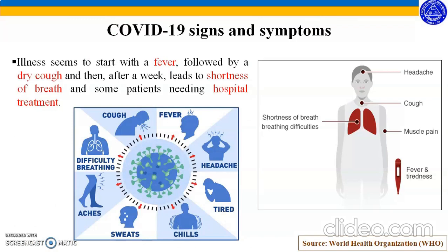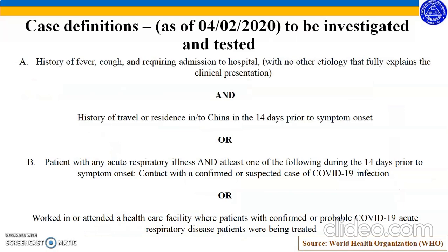What are the signs and symptoms of COVID-19? Illness seems to start with a fever, followed by a dry cough, and then after a week leads to shortness of breath, with some patients needing hospital treatment. This slide shows a diagrammatic representation of the different signs and symptoms of COVID-19. According to the World Health Organization, the case definition to be investigated and tested for COVID-19 falls into two groups.